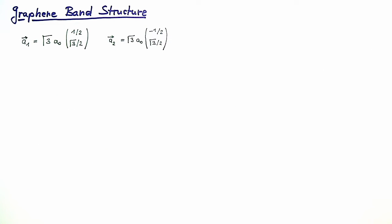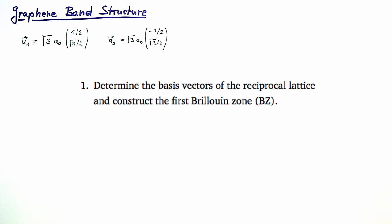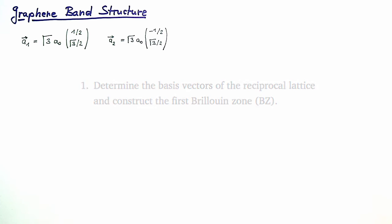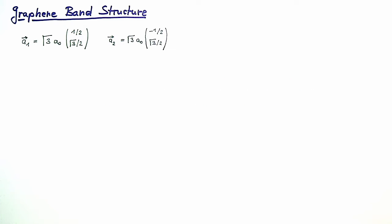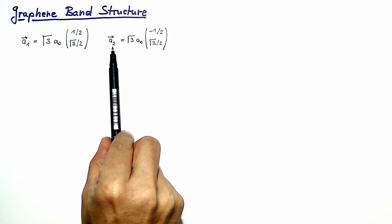In this exercise you are asked to work out essential features of the graphene band structure. The problem is split into four parts and we will start working on the first question, where you are asked to determine the basis vectors of the reciprocal lattice and construct the first Brillouin zone of graphene. You are given the basis vectors of the lattice in real space, a1 and a2.